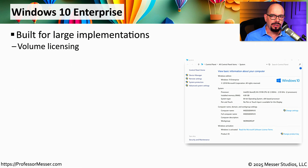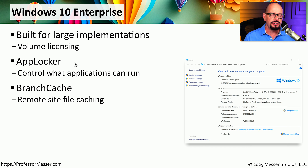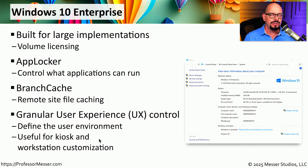If you are in a very large organization, you may be using Windows 10 Enterprise. This includes volume licensing that you can deploy to hundreds or even thousands of devices. This edition includes AppLocker, an administrative feature that allows you to enable or disable the use of certain applications. You can also use branch cache to cache data at a remote site instead of using a wide area network connection. There's also granular user experience control, or UX control, where you can define what users see on the Windows desktop and control which features are visible or invisible to end users.